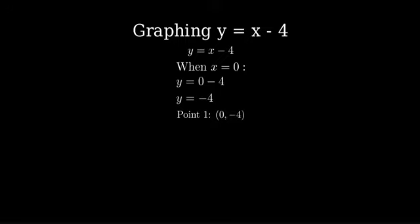Now, let's find another point. Let's choose x equals four and solve for y. This gives us our second point four comma zero.